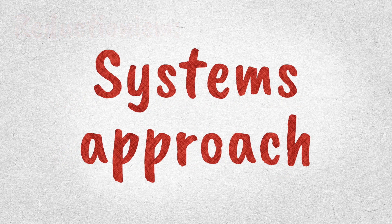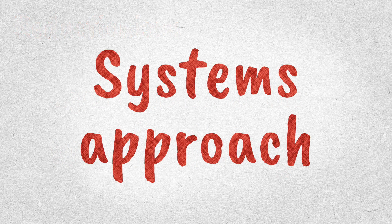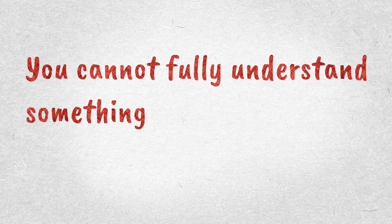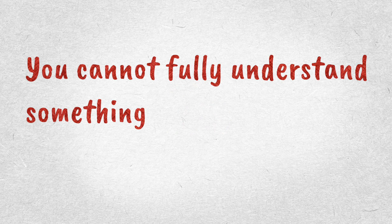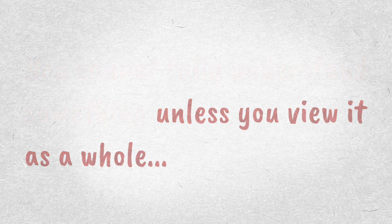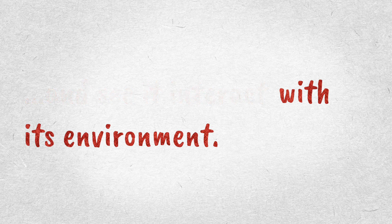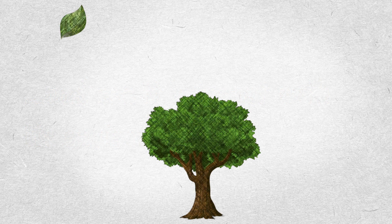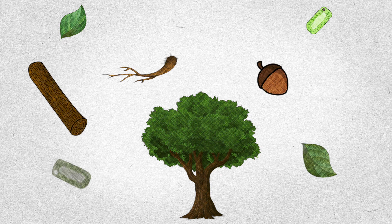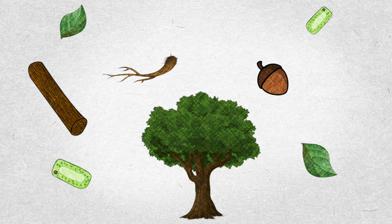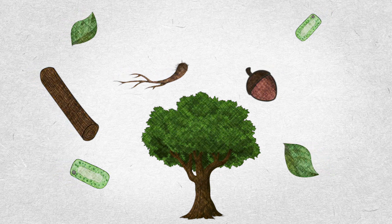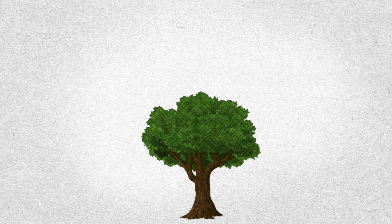So what about the systems approach? The systems approach says no — you cannot fully understand something unless you view it as a whole and see it interact with its environment. We know a lot about the individual parts, the biological structures that make up a tree, but let's think about what a tree is when we see it as a whole, using the systems approach.